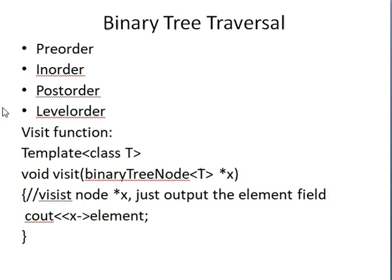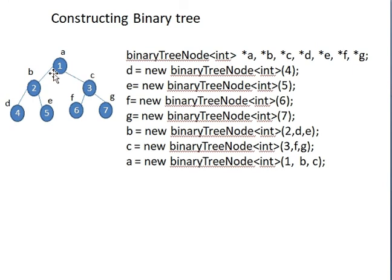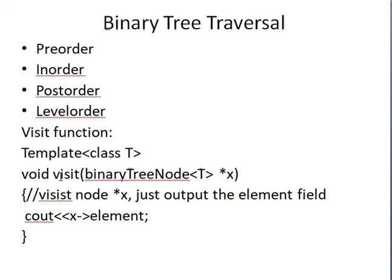Before the four traversal methods, let's look at what the visit function does, because all methods use it. The visit function: when you visit a node, the element value in that node will be printed. It is void - not returning anything - but takes a BinaryTreeNode pointer as argument. The visit function's job is to display the element present in the node using cout. Remember: visit function means visiting a node - the element present will be printed.